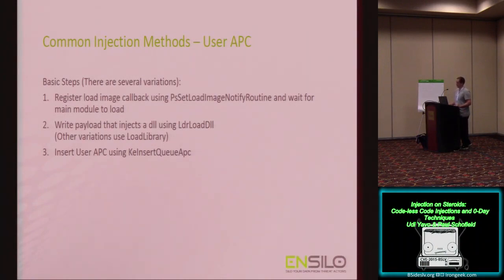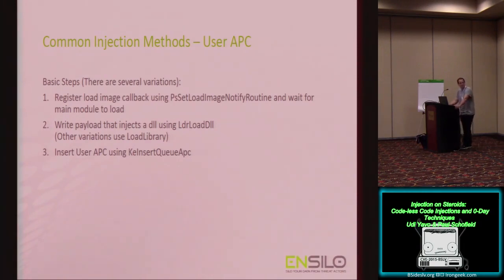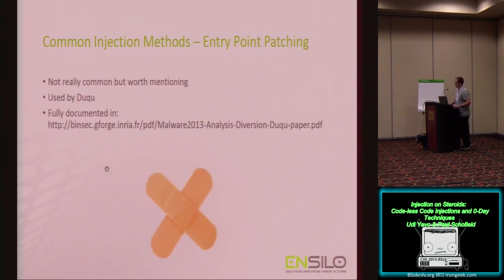One kernel injection method is to wait on a load image notify routine, which gets called each time an image is mapped into the target process. Write some payload into the other space — for example, something that calls LdrLoadDll to inject some DLL or load library. There are several variations, but the principle is pretty much the same. Then insert an APC using KiInsertQueueApc. Code for this method can be found on the internet relatively easily, so there's no need to elaborate.